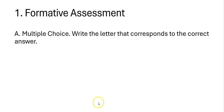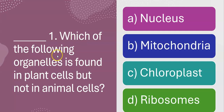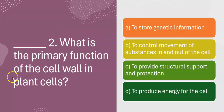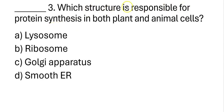Now let's proceed to the formative assessment. Write the letter that corresponds to the correct answer. Question 1: which of the following organelles is found in plant cells but not in animal cells — nucleus, mitochondria, chloroplast, or ribosomes? Question 2: what is the primary function of the cell wall in plant cells — to store genetic information, to control movement of substances, to provide structural support and protection, or to produce energy? Question 3: which structure is responsible for protein synthesis in both plant and animal cells — lysosome, ribosome, Golgi apparatus, or smooth ER?